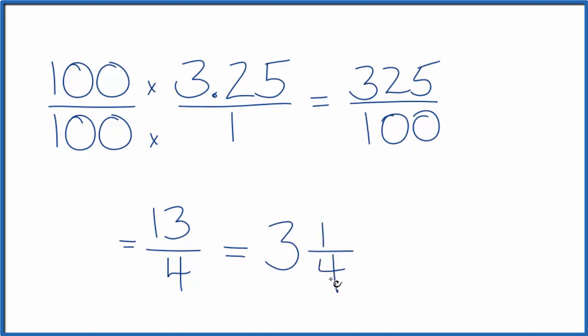3 times 4 is 12, plus 1 is 13. So 13 over 4. This would be the mixed fraction for 3.25. This would be the improper fraction. This is Dr. V converting 3.25 to a fraction. Thanks for watching.